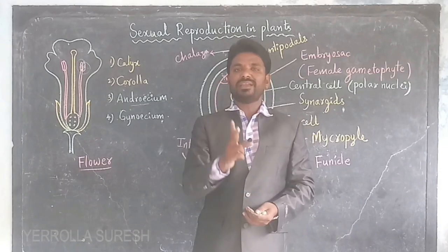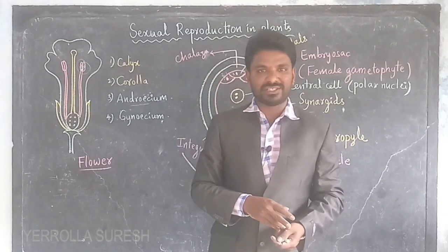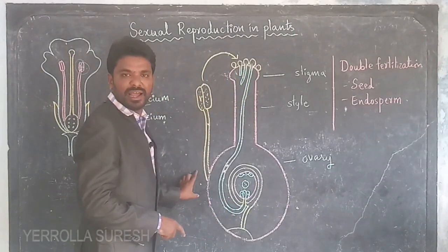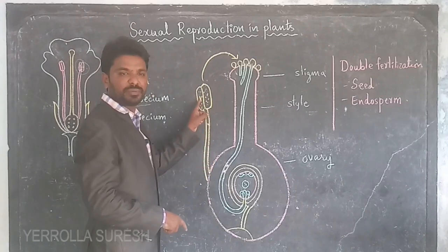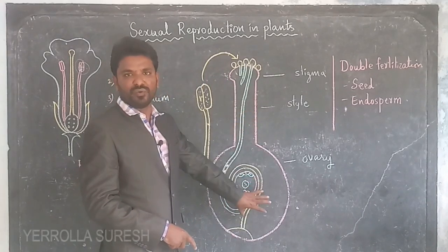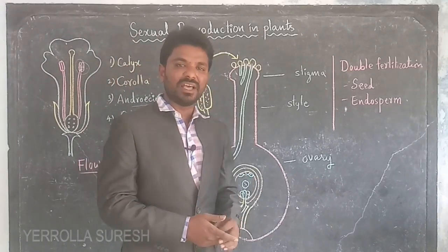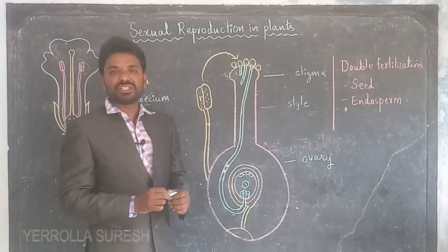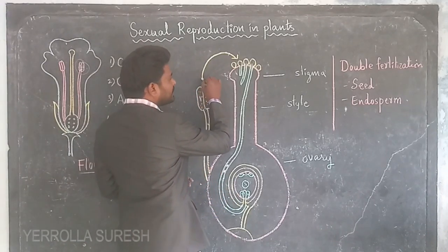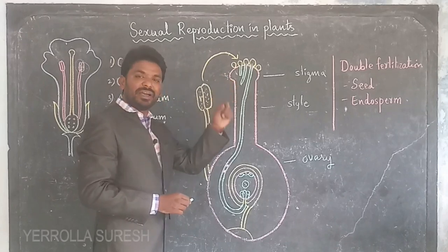For the process of reproduction, two processes are involved: the first is pollination and the second is fertilization. Pollination means the transfer of pollen grains from the anther to the stigma. The pollen grains are present in the anther, and when they fall on the stigma, that is called pollination.